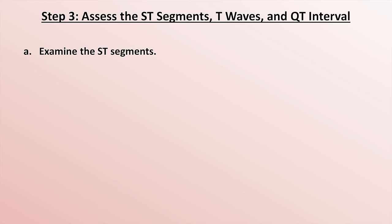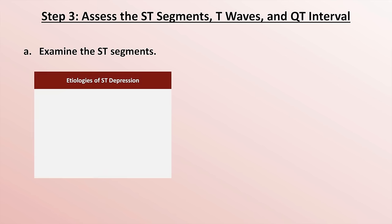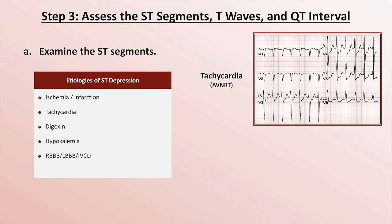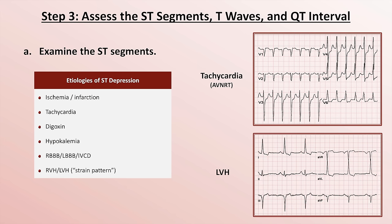Of almost equal importance is ST depression. The most notable cause is coronary ischemia or infarction. Other causes include tachycardia even in the absence of ischemia, digoxin even at therapeutic doses, hypokalemia, bundle branch blocks, and ventricular hypertrophy. ST depression due to the last two is usually referred to as a secondary repolarization abnormality, since the abnormal sequence of repolarization is caused by the underlying abnormality in depolarization. The others are referred to as primary repolarization abnormalities.